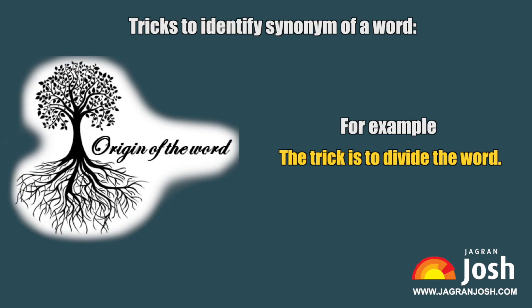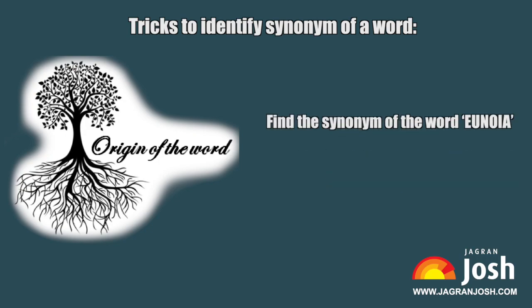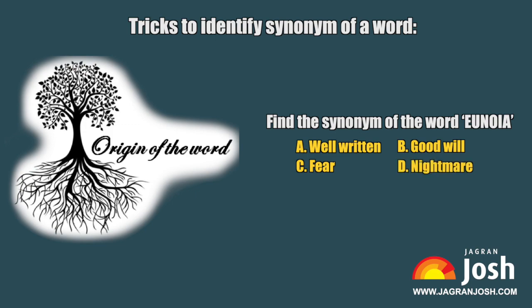It may sound intimidating, but the trick is to divide the word: it is 'u' plus 'noya'. 'U' has the meaning of pleasant or something good. So let's solve the example question: Find the synonym of the word 'unoya'. A. Well written, B. Good will, C. Fear, D. Nightmare. After dividing the word and understanding the root 'u', you can exclude C and D.